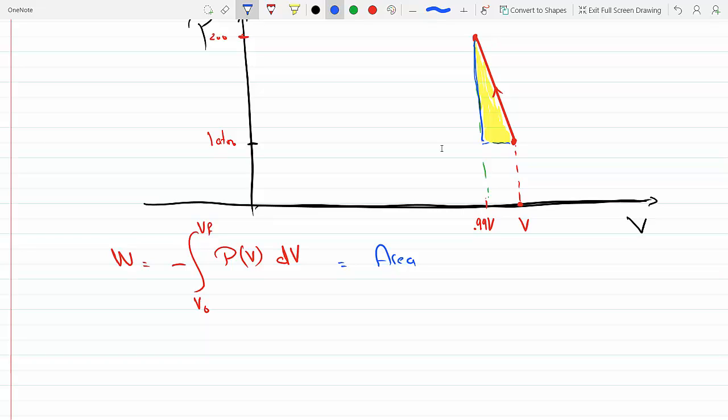Let's see what we get with an area approximation. I mean, after all, this is an estimation question. We get the work to be one-half times V minus 0.99V times 200 minus 1. That's the height. So this turns out to be 0.995V.